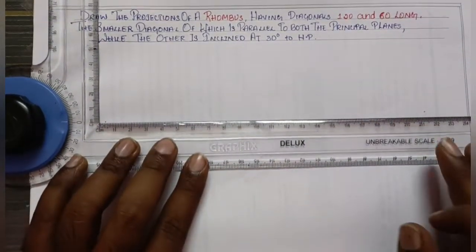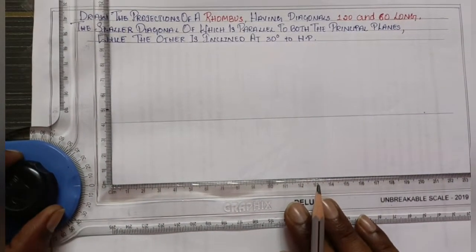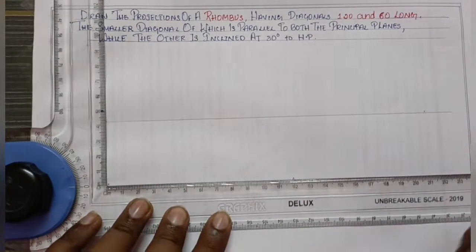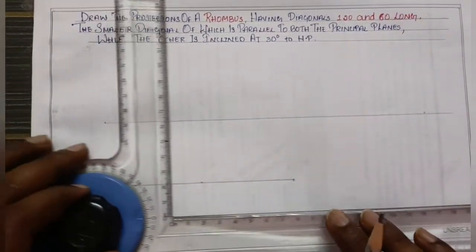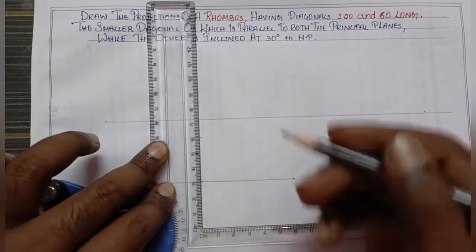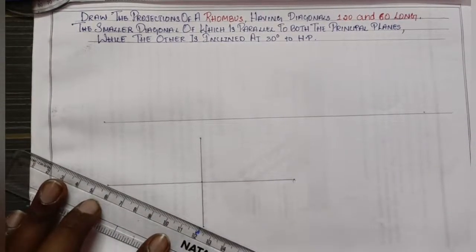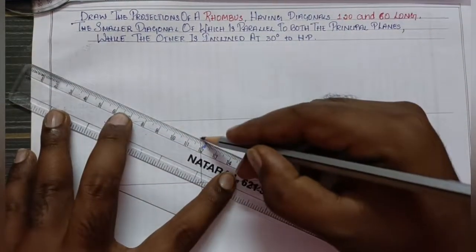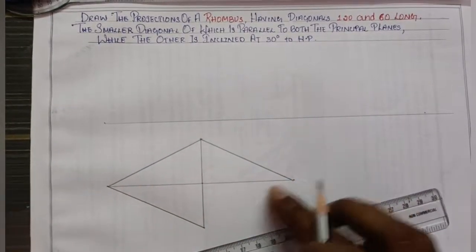First, draw the XY line — you can see the XY line and the axis line. The first dimension is 120, so draw the 120 line from 0 to 120. Then the middle is 60, so draw the 60 line. The 30-30 middle point is marked, making a total of 60. Mark points A, B, C on the rhombus in HP.